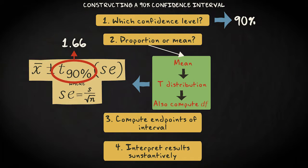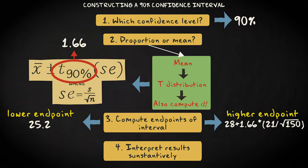We can now complete the formula. The lower endpoint is 28 minus 1.66 times 21 divided by the square root of 150. That makes about 25.2. The higher endpoint is 28 plus 1.66 times 21 divided by the square root of 150. That is about 30.8.